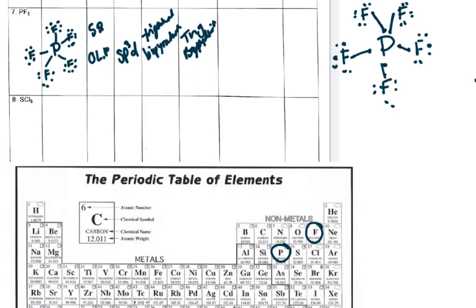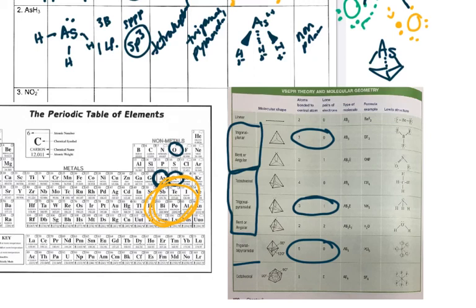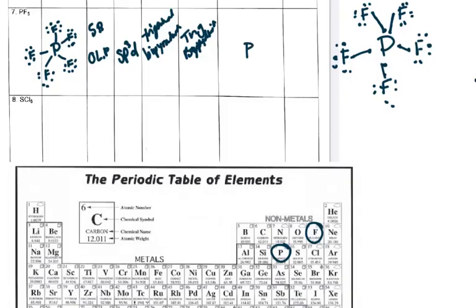Trigonal bipyramidal means it's making a triangle with three of the atoms in the equatorial plane, and then one above and one below — like two pyramids. For the wedge and dash diagram, I have phosphorus in the center with one fluorine going backwards, one coming forward, and one in the plane to make the equatorial triangle, then one fluorine going up and one going down.